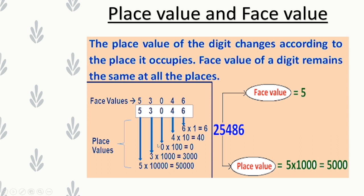Place value of 0 is 0 × 100 = 0, because 0 is in the 100's place. Face value of 0 is 0. Place value of 3 is 3 × 1000 = 3000, because 3 is in the 1000's place. Face value of 3 is 3 itself.